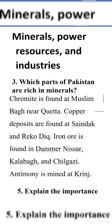Pakistan کے وہ علاقے جہاں معدنیات کے ذخائر ہیں: Chromite is found at Muslim Bagh near Quetta. Copper deposits are found at Sindic and Dracodic. Chromite جو ہے یہ Quetta میں Muslim Bagh کے مقام پر ملتا ہے، اور Copper کے ذخائر Sindic اور Dracodic میں ہیں۔